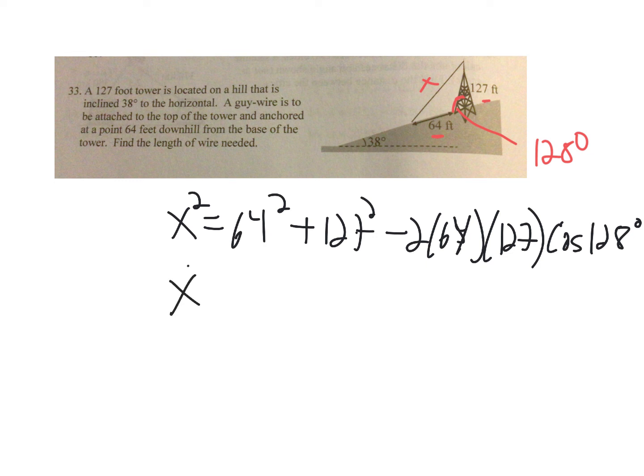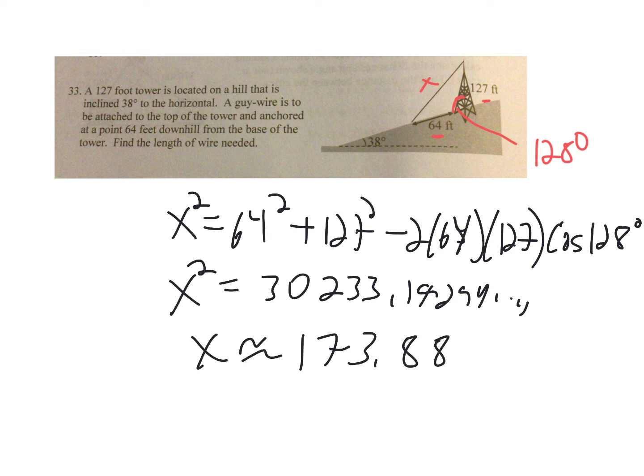When I did that, I got that x squared equals 30,233.19294, and then I took the square root, so I got about 173.88, which is what they have in the back of the book, which I agree with.